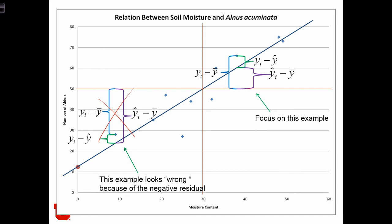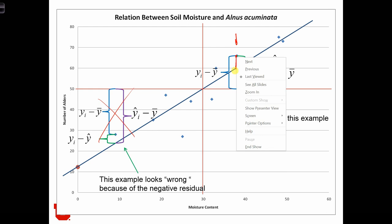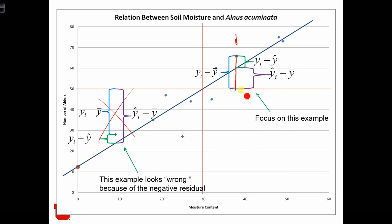In this case over here, we have an observed location i, and at that location we have a yi up here. The total variance — the component of the total sum of squares that this observation is going to add — is going to be equal to the squared difference between yi and y bar. So it's the square of this quantity over here.